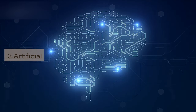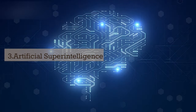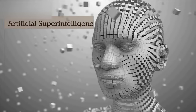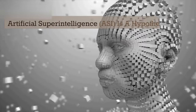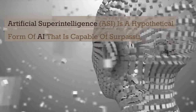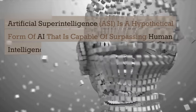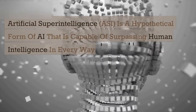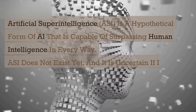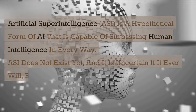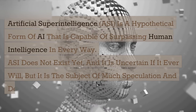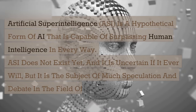The third type is Artificial Superintelligence, which is a hypothetical form of AI that is capable of surpassing human intelligence in every way. It does not exist yet, and it is uncertain if it ever will, but it is the subject of much speculation and debate in the field of AI.